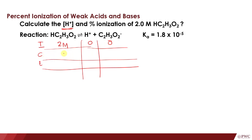For the change row, we put −X for acetic acid since the reactant is decreasing over time. For the formation of H+ and acetate, that's +X because they are increasing in concentration. Based on the coefficients in the balanced chemical equation, the change is the same: X, X, and X. For the equilibrium row, which is the sum of initial plus change, we have 2M − X for acetic acid, and X for both H+ and acetate.